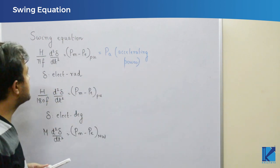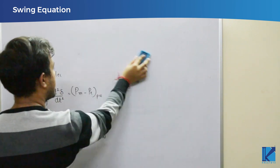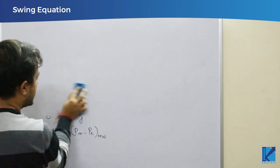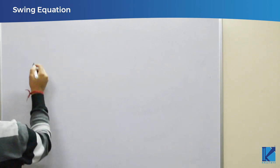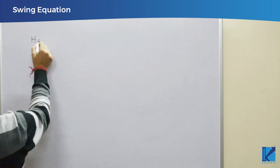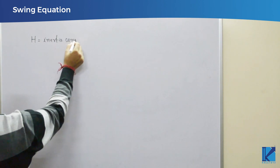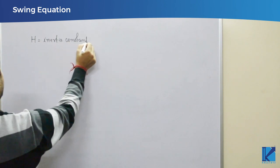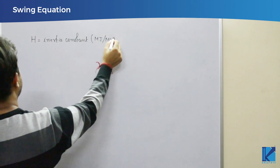Now, what is this H and M? These both are called as inertia constants. What is the difference between them? The only difference lies in their units. So what is H?